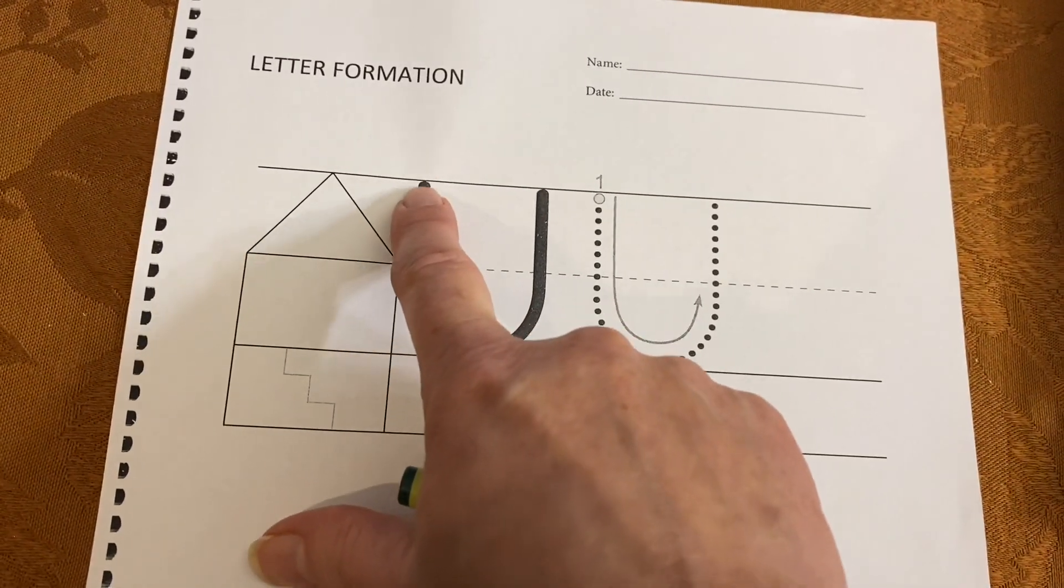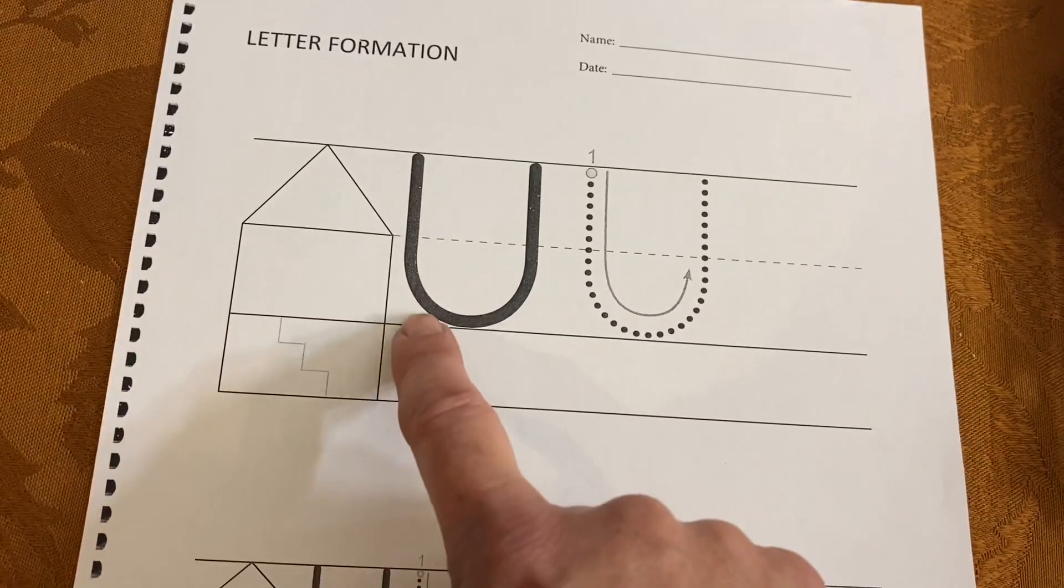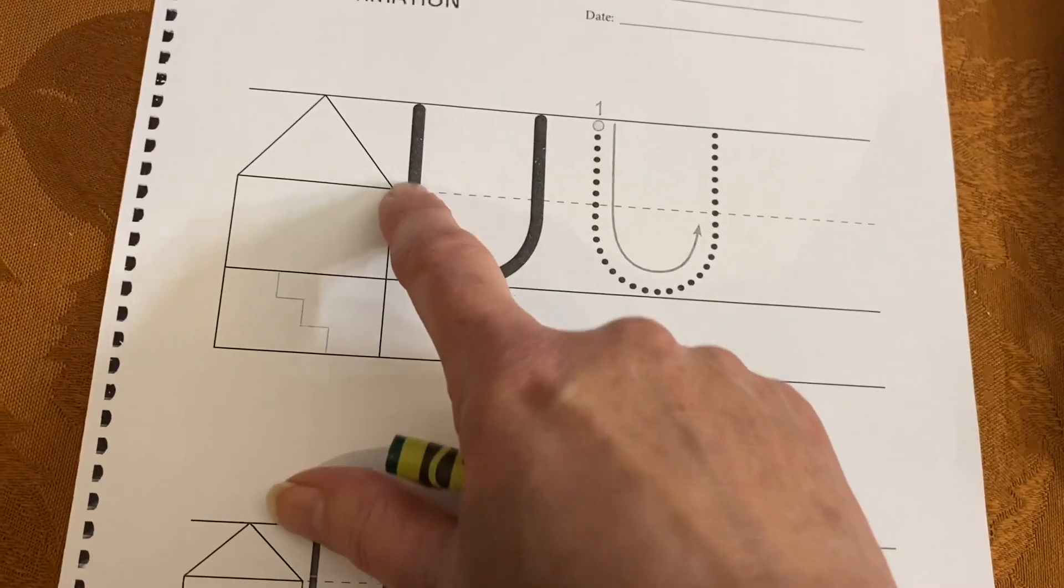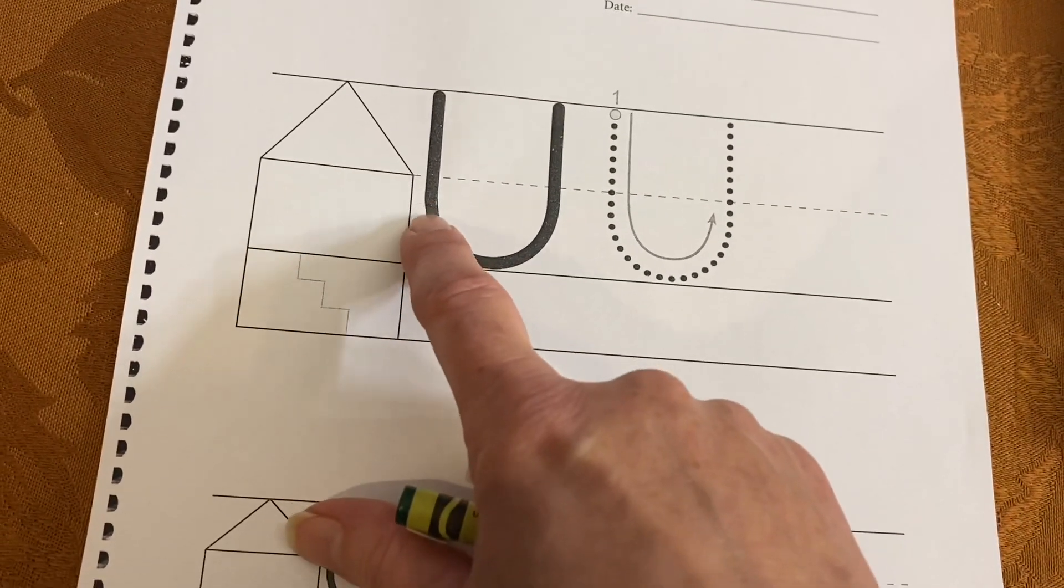You start at the top, you come down, and just before you come to the bottom, we start to curve maybe halfway between the middle line and the bottom lines where we start the curve.